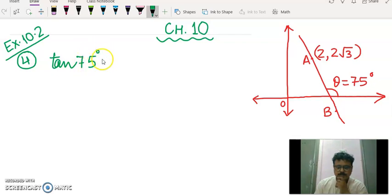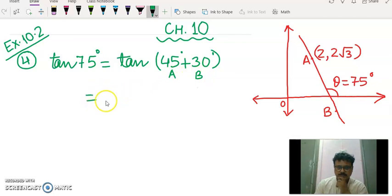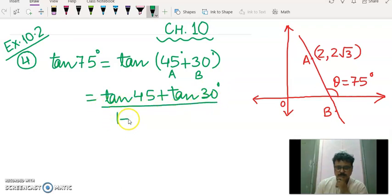So there is a formula which we have not studied as yet which says split the angle into two angles which are known to us. So this is actually the formula of tan a plus b which says tan a plus tan b upon 1 minus tan a tan b.